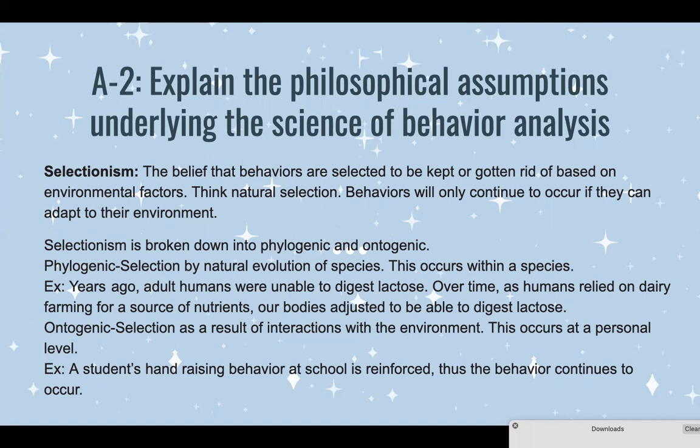Ontogenic is selection as a result of interactions with the environment — this is at a personal level. For example, a student's hand-raising behavior at school is reinforced, thus the behavior continues to occur. That behavior adapted to its environment and receives reinforcement for it.